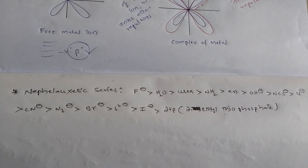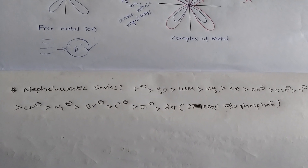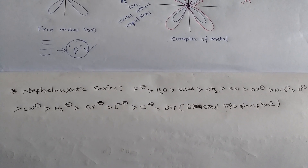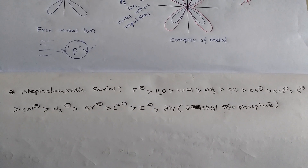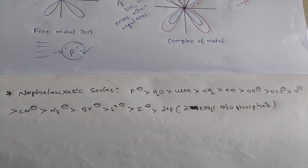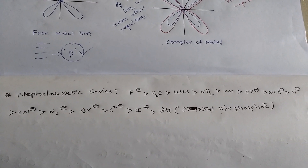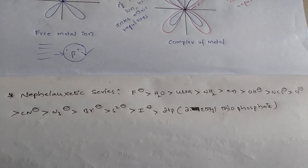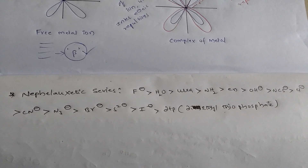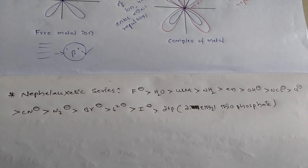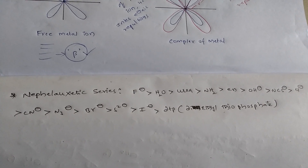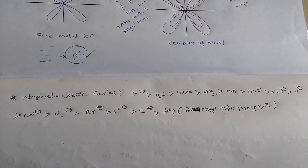This is the nephelaxitic series: F⁻ > H₂O > urea > NH₃ > diethylamide > OH⁻ > NCS⁻ > Cl⁻ > CN⁻ > N₃⁻ > Br⁻ > S²⁻ > I⁻ > DDP (diethyl thiophosphate). This is the nephelaxitic series.